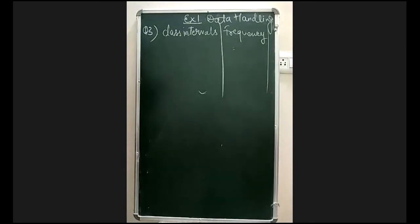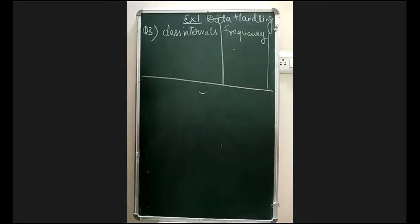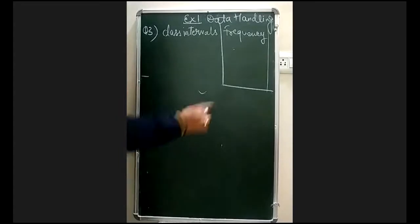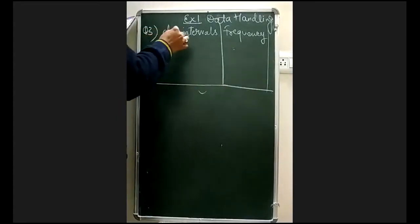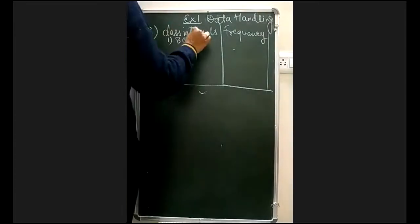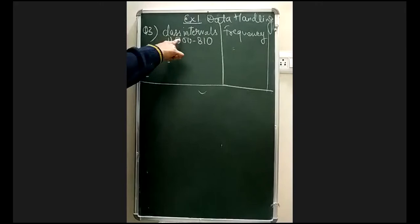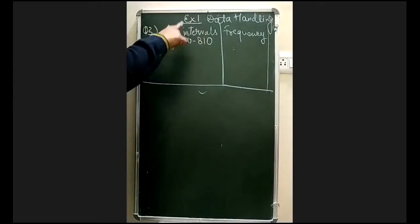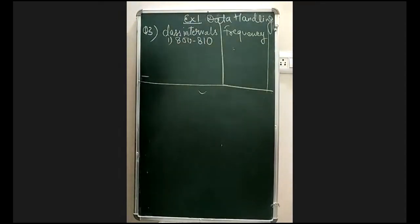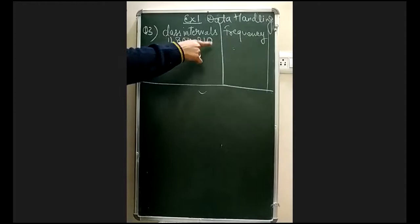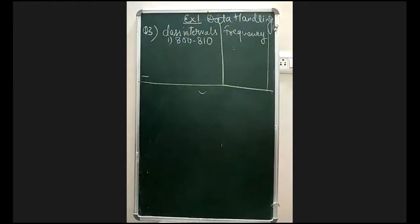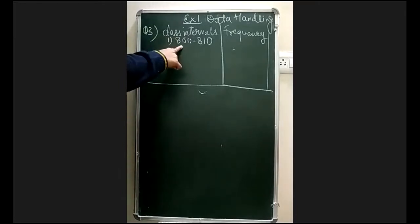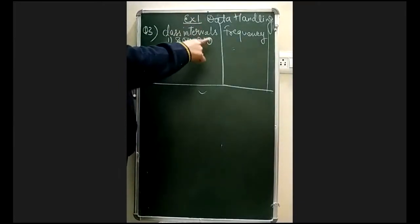I don't have much space so I will tell you the tally marks at the end. Please do the tally marks along with me. Now remember: for the interval 800 to 810, you can include 800 up to 809, but 810 will not be included in this interval — 810 will be included in the next interval.